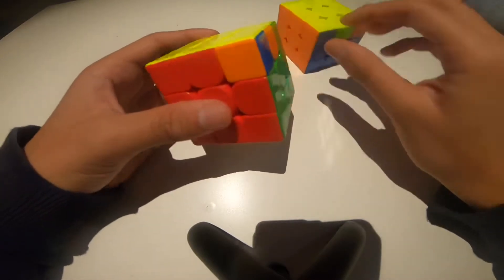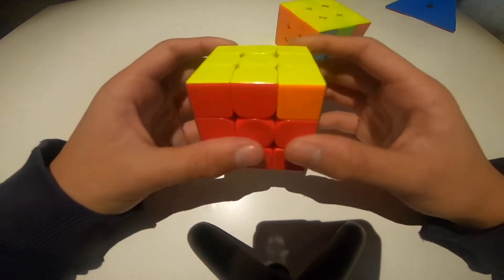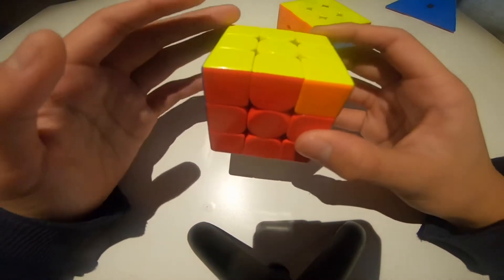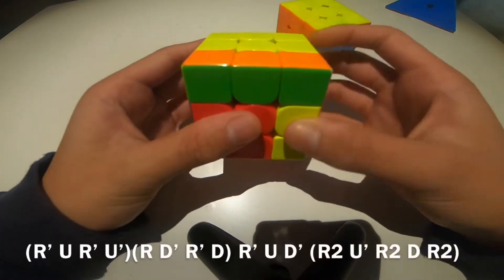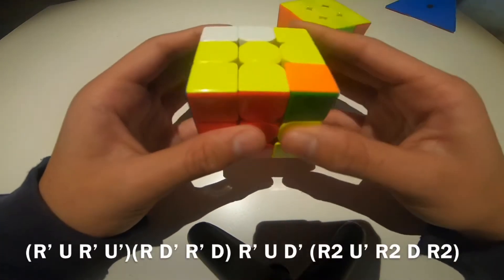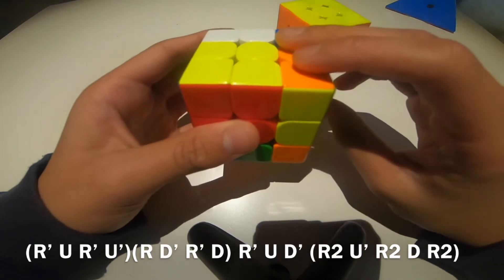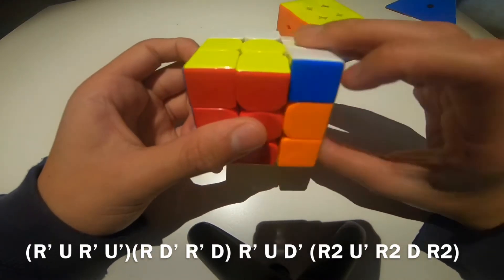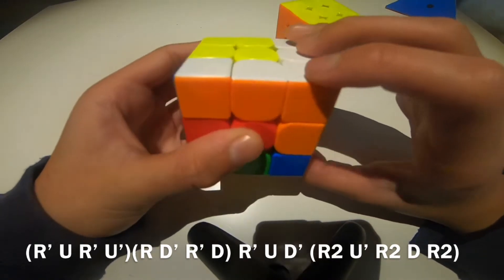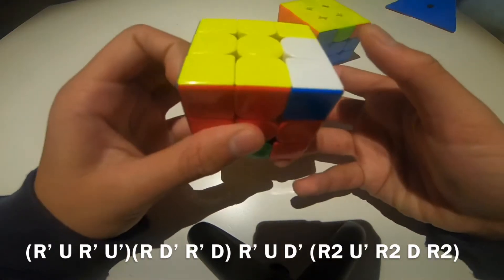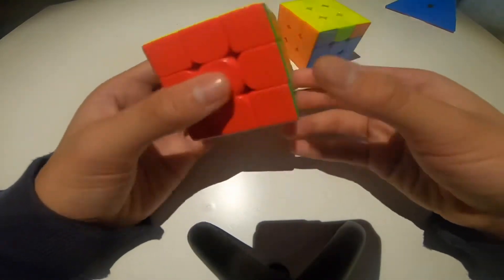Here's the next algorithm. So here's an R U D V-perm that I don't use. I used a modified version of this. So R' U R U', R D' R' D, R' U D' at the same time, R2 U', R2 U' R2 U R'. So it goes faster.